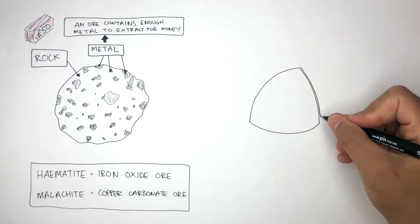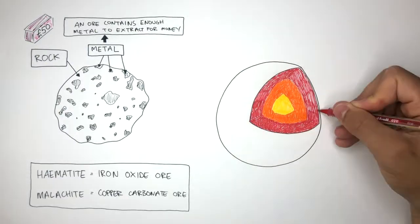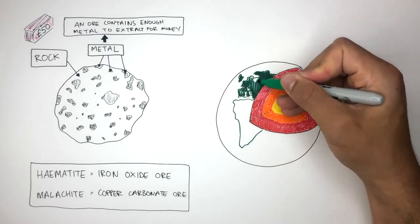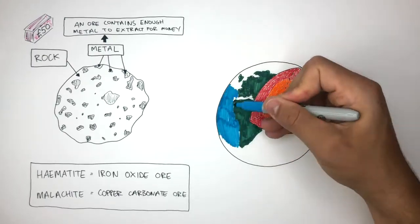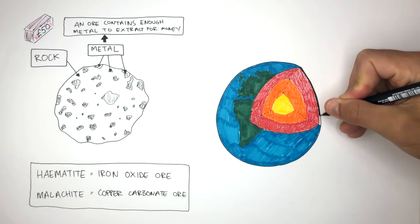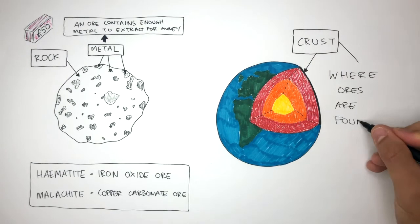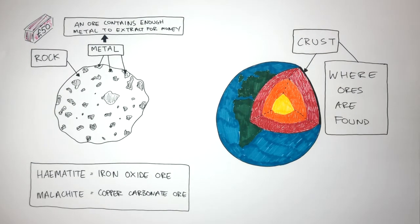Here I'm drawing the structure of the earth, where this represents the core and mantle, and this represents the outer surface of the earth, the land and the ocean. This very thin layer of hard rock, which I'm coloring in black, is the crust. And this is where ores are found. Ores are found in the earth's crust.